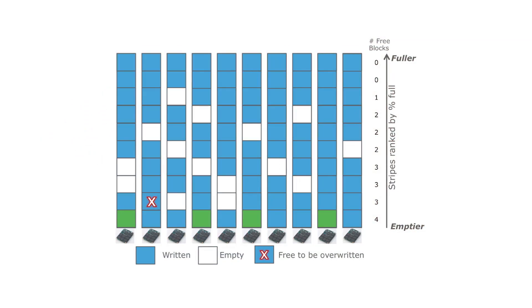XtremeIO uses a fixed block layout. The data is written out in RAID stripes — a RAID set of 23 plus 2 disks. Once a drive is fully written, partial stripes are updated in place with the new data. The benefit here is that existing data doesn't move once it's written. The blocks, as they're laid out, are a fixed 8K size.